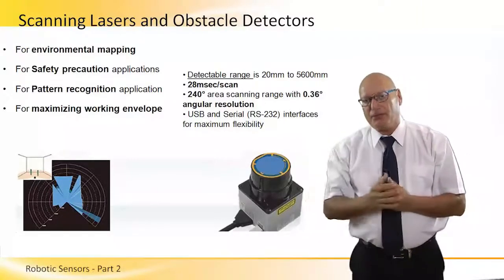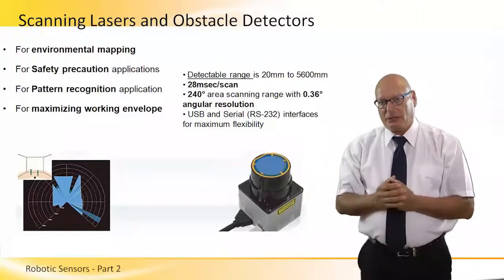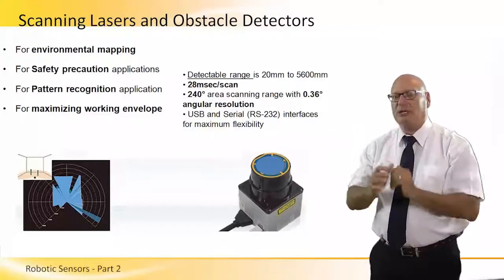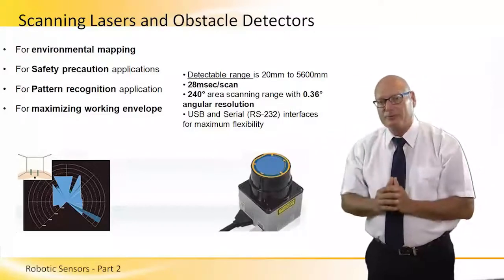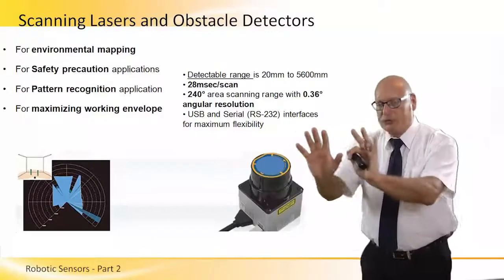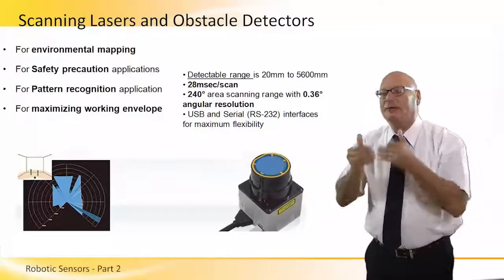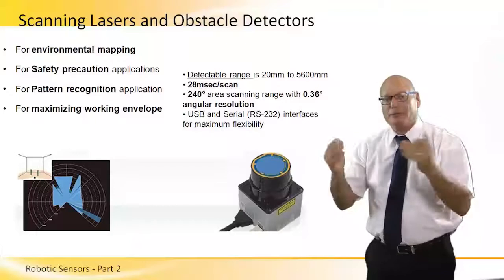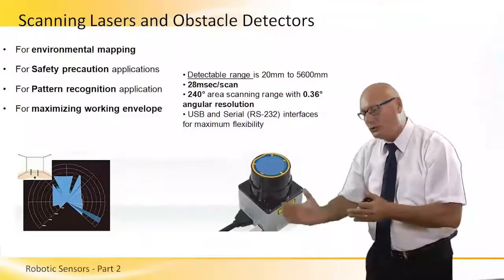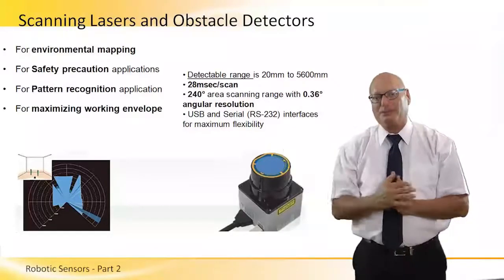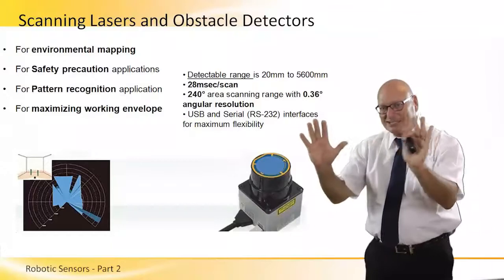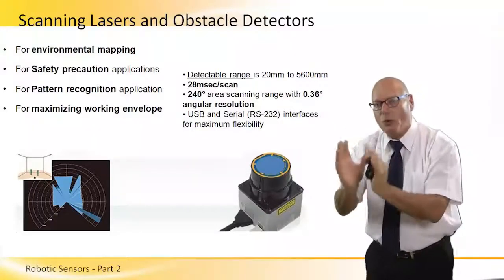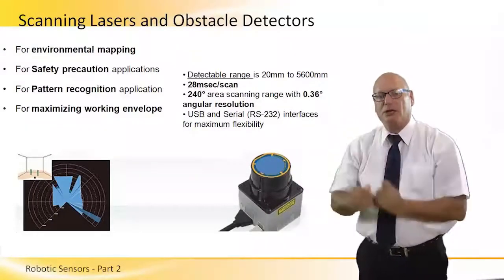It's for environmental mapping. It's a safety precaution application when a robot is in motion. The robot wants to know that there are no obstacles, and if there are obstacles, to know the size, the measurements, and the position of the obstacle in order to bypass it. So we need the laser scanning in front to know exactly where we are and what kind of obstacle we have.